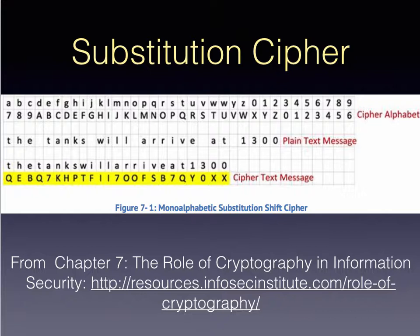This is a sample of a substitution cipher from the chapter in my book at the InfoSec Institute on cryptography. A substitution cipher simply assigns another digit to each letter of the alphabet — in this case A is assigned 7, B is 8, C is 9, etc. Taking the plaintext message 'the tanks will arrive at 1300,' I simply replace T with Q, H with E, and so on through the rest of the message to come up with the ciphertext. This is known as a mono-alphabetic substitution shift cipher.